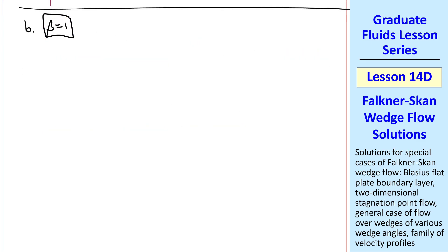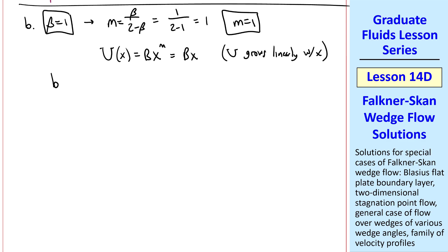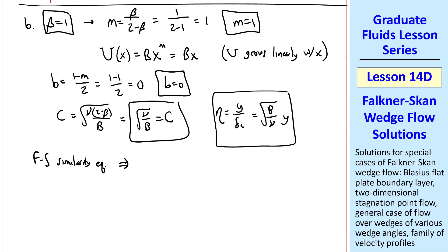Next, let's try beta equal 1. Plugging in 1 for beta, we get m equal 1. So u of x is bx to the m, or bx. So u is not a constant, but it grows linearly with x. Similarly, we calculate the other constants. We get little b equals zero, and c becomes square root of nu over b. Eta becomes square root of b over nu times y. And the Falkner-Skan similarity equation, when beta is 1, becomes f triple prime plus f f double prime plus 1 minus f prime squared equals zero.